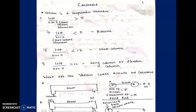To design any member, we have to understand the load coming on it. With the pattern of loading we can decide the behavior — how the member will deflect, buckle, or fail. If we know that pattern we can design it. For the first figure, I have drawn a beam with end columns. The reactions at the beam ends are the axial force acting on the column; the reaction of the beam acts as an axial load for the column.